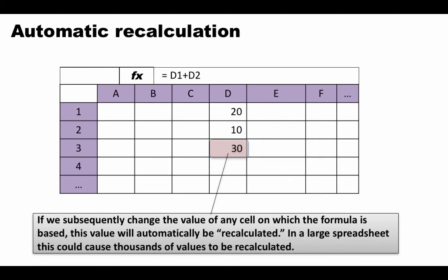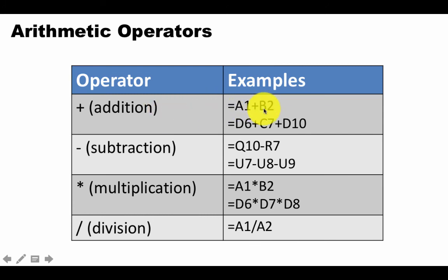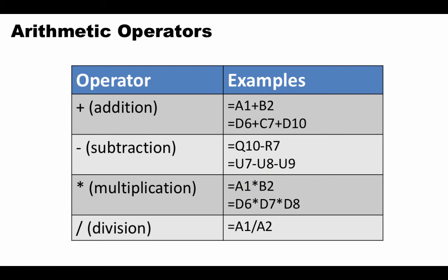We've already seen that the equals sign at the beginning of a cell entry tells Excel it's a formula. The arithmetic operators available in Excel formulas are: plus (+) for addition, minus (-) for subtraction, star (*) for multiplication — so '=A1*B2' multiplies the two cells — and forward slash (/) for division. Note it's the forward slash, not the backslash; backslash is not the division operator. You can use these arithmetic operations when writing your formulas.